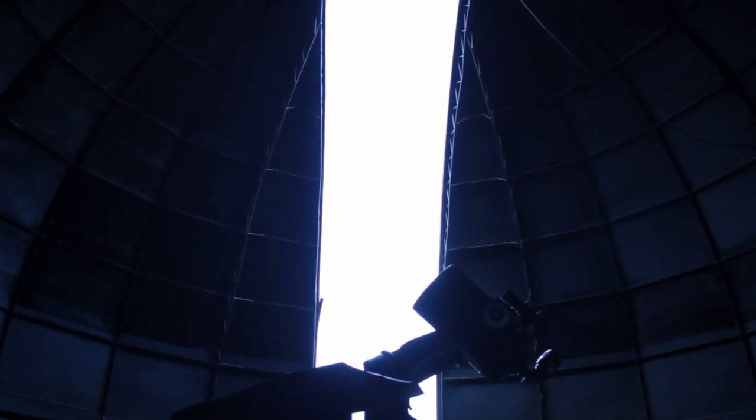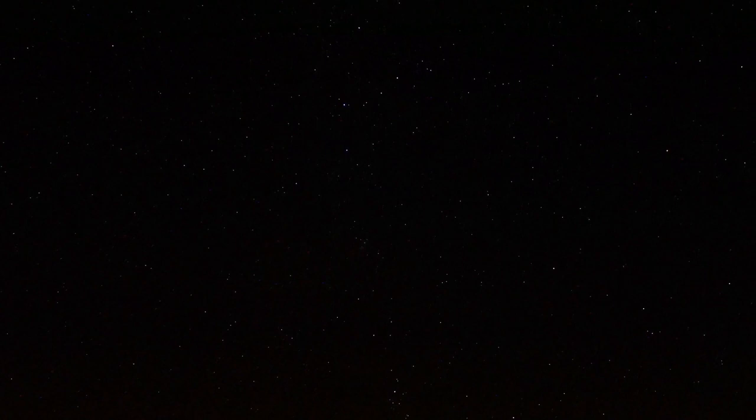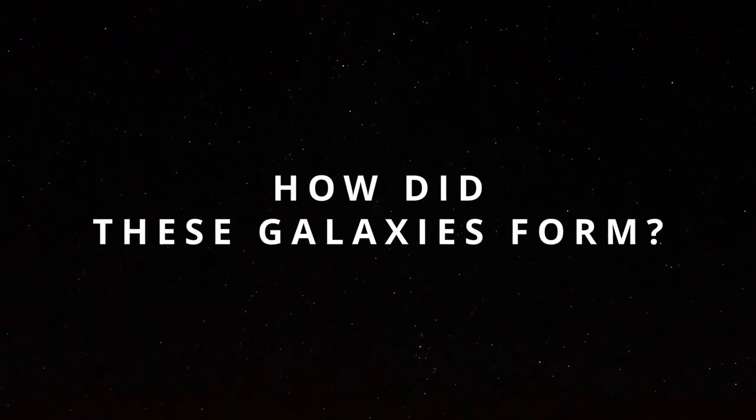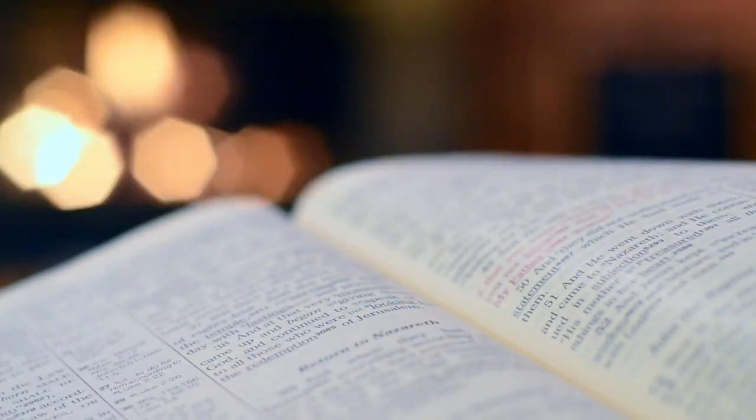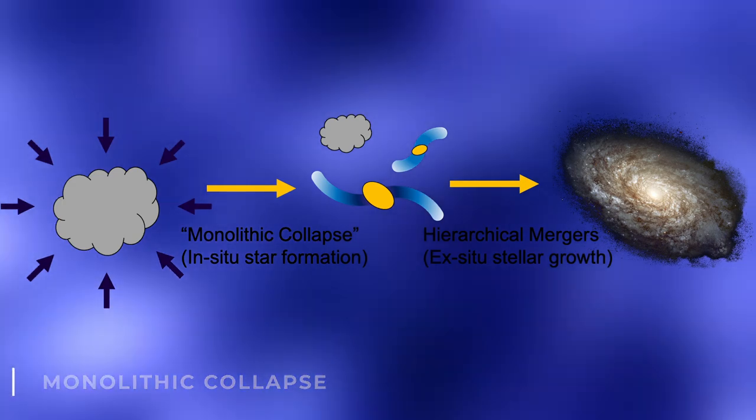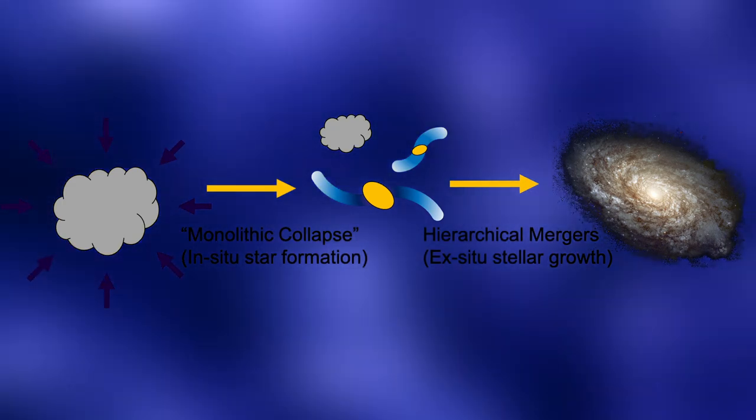But the influence of the discovery goes even further. The fact that galaxies so far away, and therefore younger, are already so developed leaves everyone with the question, how did these galaxies form? A practically discarded theory returns to the surface. It is the monolithic collapse that considers that a galaxy is formed through the collapse of gases and dust.